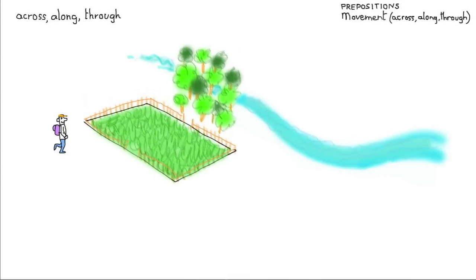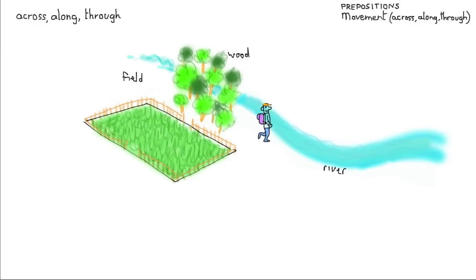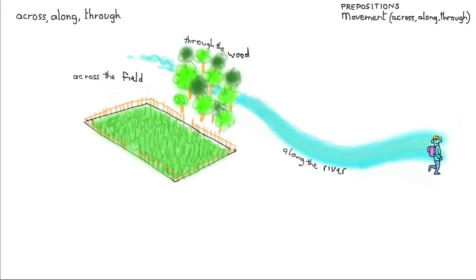Now I'd like to move on to scene number two. Here we've got a young man who is ready to go hiking — he's got his rucksack — and there's a field, a wood and a river. I'll just put the three words in there: field, wood and river. And here's the young man off on his walk. He goes across the field, through the wood and along the river. So: across the field, through the wood and along the river. Once again we've got across, through and along.